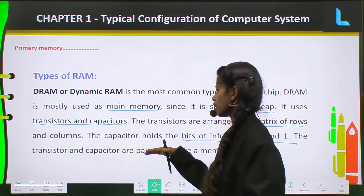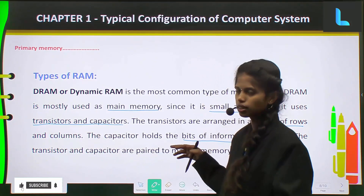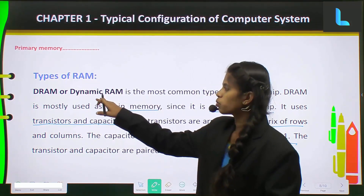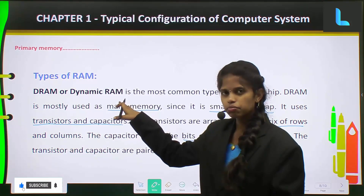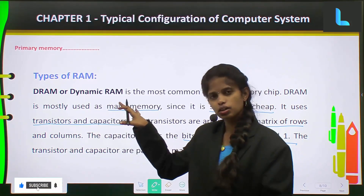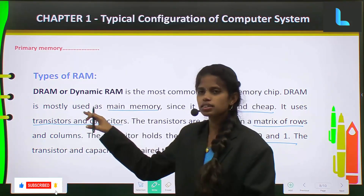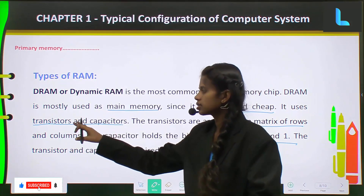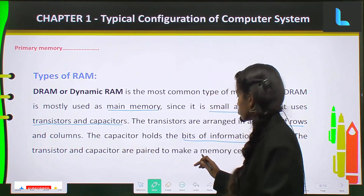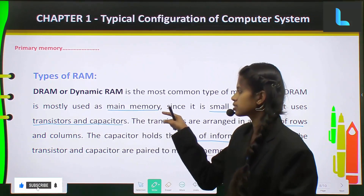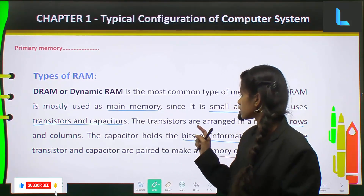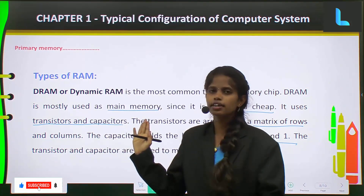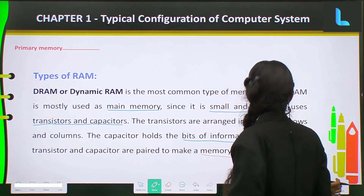The transistors and capacitors are paired to make a memory cell. In DRAM, transistors and capacitors are used, and these make up a memory cell. Capacitors are used to hold the bits of information. This is sufficient description for Dynamic RAM.